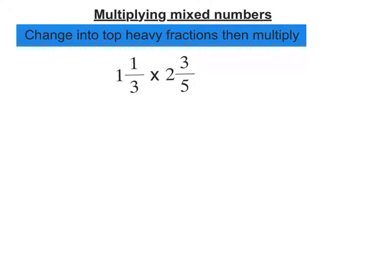For instance, here we've got 1 and 1/3. To convert this into a top heavy fraction, we do the whole number times the denominator plus the numerator, all over the denominator.